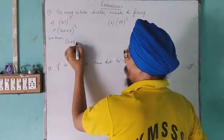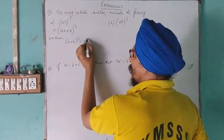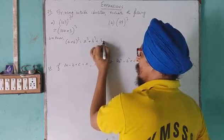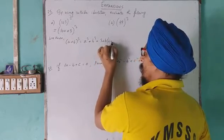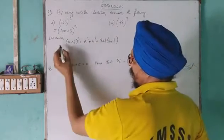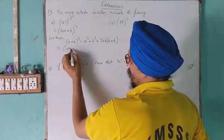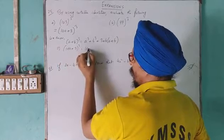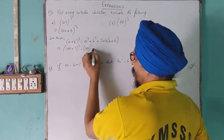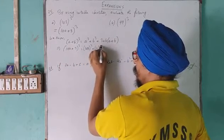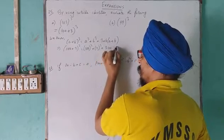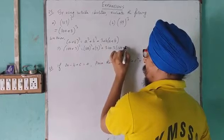So a plus b whole cube equals a cube plus b cube plus 3ab bracket a plus b. So a humara kya hai, 100, b humara kya hai 3. So a cube plus b cube plus 3 into 100 into 3, 100 plus 3.